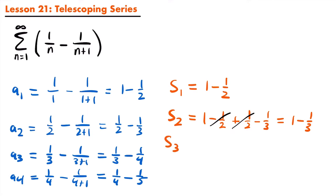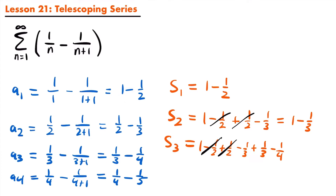Now if we look at s sub 3, that's equal to a sub 1 plus a sub 2 plus a sub 3, so we have 1 minus 1 half plus 1 half minus 1 third plus 1 third minus 1 fourth. The negative 1 half and positive 1 half cancel out, and the negative 1 third and positive 1 third cancel out as well, leaving us with 1 minus 1 fourth.